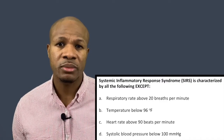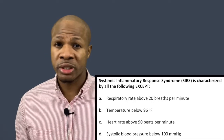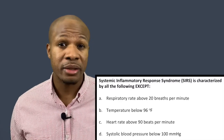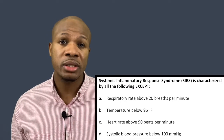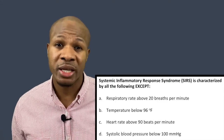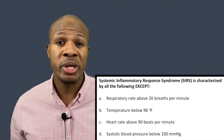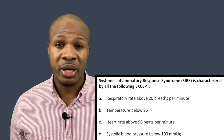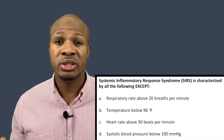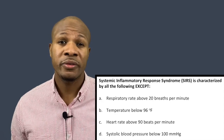Answer choice A says respiratory rate above 20 breaths per minute. If someone's body is going into distress, increased respiratory rate would definitely be a sign, because typically when your body is mounting such a response it's going to require a lot of oxygen. You're going to breathe a lot faster because the body is trying to get in as much oxygen as it can to create the energy needed to mount that response and fight off the infection.